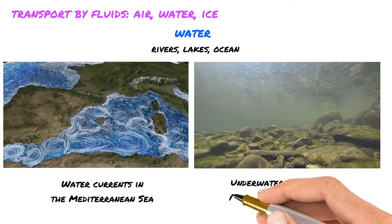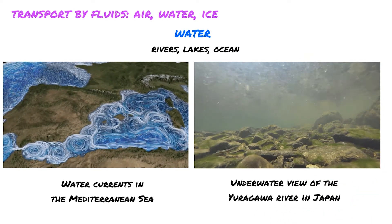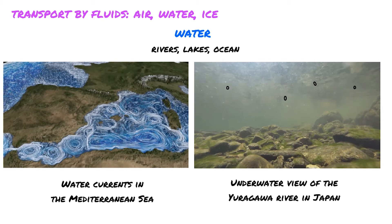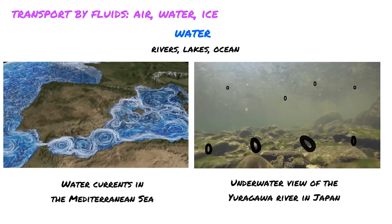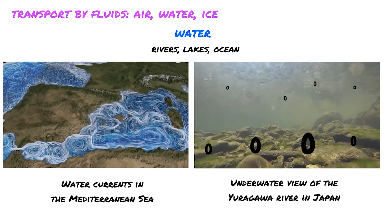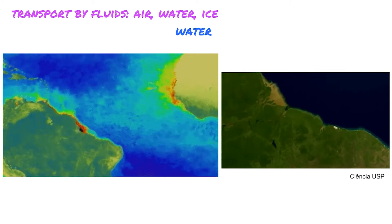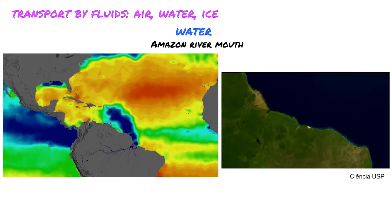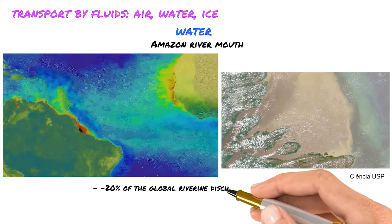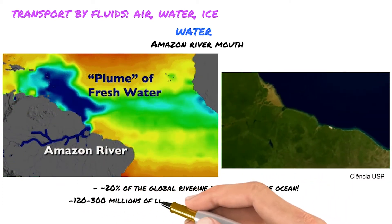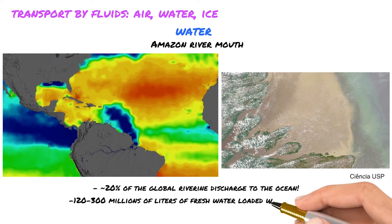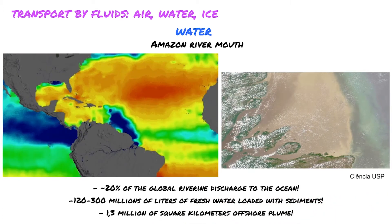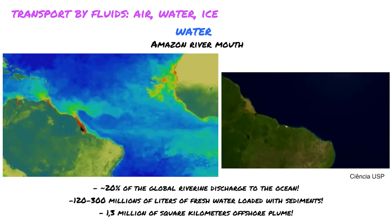Here we have an underwater view of water flow in a river in Japan. Water flows can be strong enough to carry both fine-grained material in suspension and coarse particles at the base of the flow, giving them the potential to carry particles for thousands of kilometers. An extreme example is the Amazon River mouth: this river accounts for 20% of the global total discharge of rivers into the ocean, which means a discharge of 120 to 300 million liters of sediment-filled freshwater every second. This generates a sediment-rich plume of 1.3 million square kilometers, flowing mainly northward into the Caribbean region.